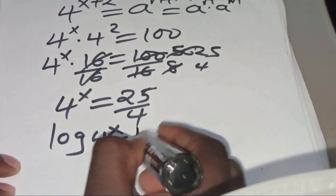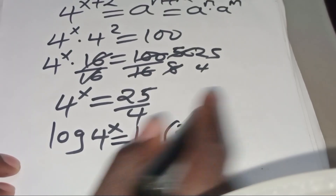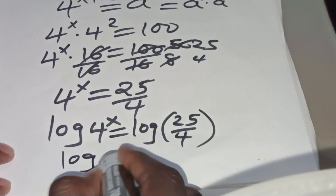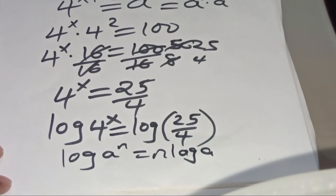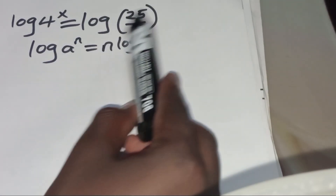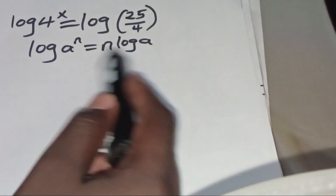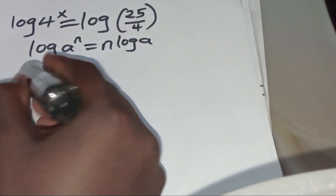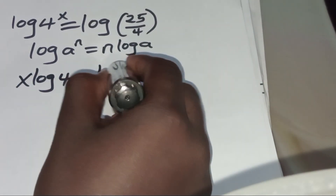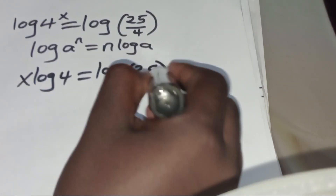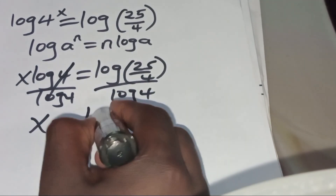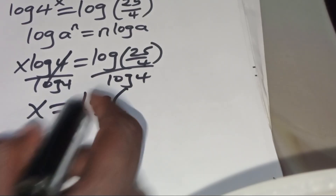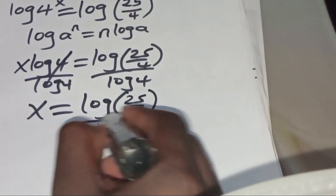Now, for the value of x, we introduce the square root: √(4^x) equals √(25/4). Now √(4^x) is in the form of √(a to the power n), which we can express as n times √a. Applying this power-root property, √(4^x) becomes x times √4, and this equals √(25/4). Dividing both sides by √4, x equals √(25/4) divided by √4.